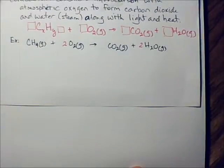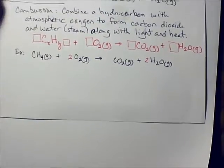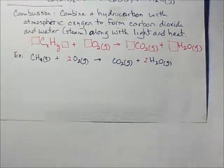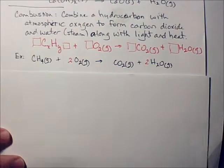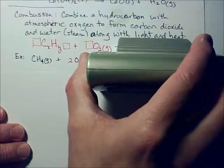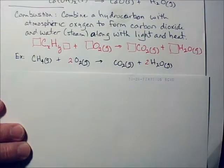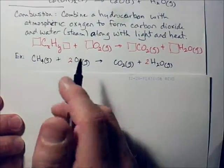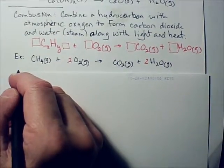Let's give you an example, let's balance one real quick. Here's methane, the simplest of hydrocarbons, combining with atmospheric oxygen. We're producing CO2 and we're producing steam, water in the form of gas. And to balance this, we're going to put a 2 here and a 2 here. All of these are gases.